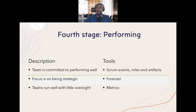At this stage, the team becomes more strategic and innovative. They can come up with ideas to deliver increments, they trust each other, and they have smooth conversations. The tools to keep the team in check are the scrum events — they know how to run a daily scrum, how to demo during the sprint review, and how to have constructive conversations during the sprint retrospective. They understand each role, the scrum artifacts, forecasting, and using KPI metrics to measure progress.